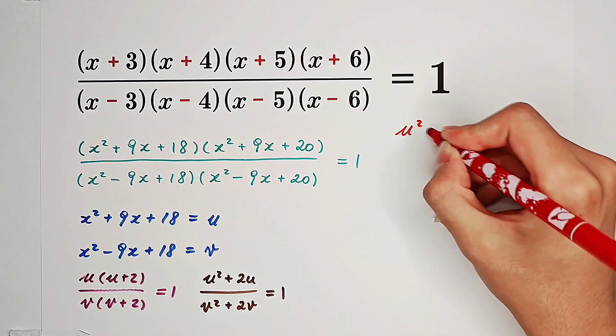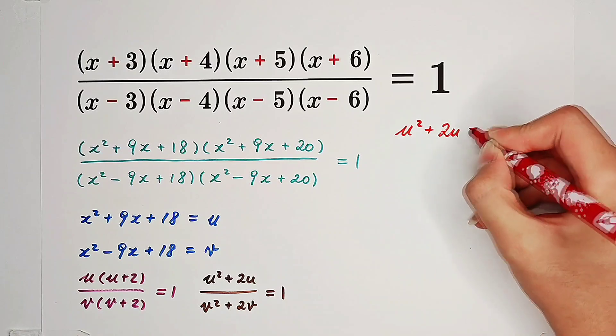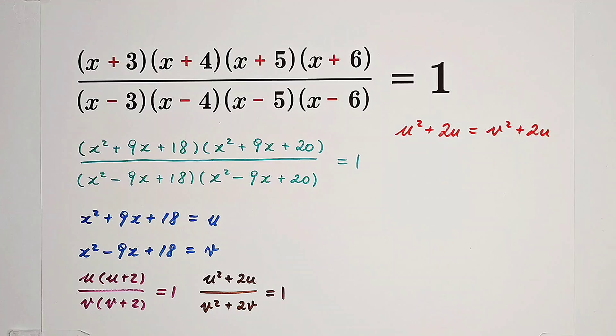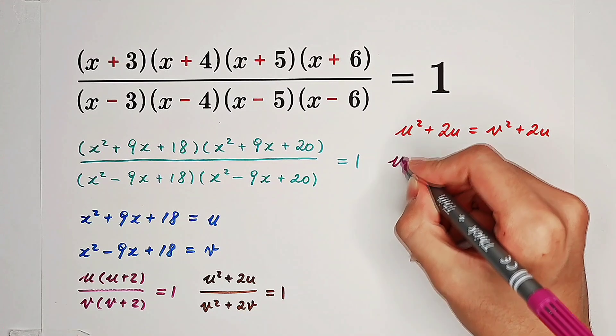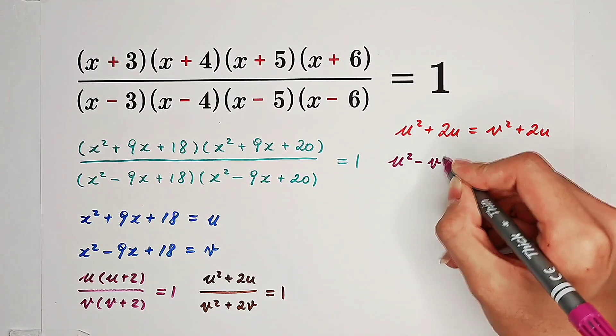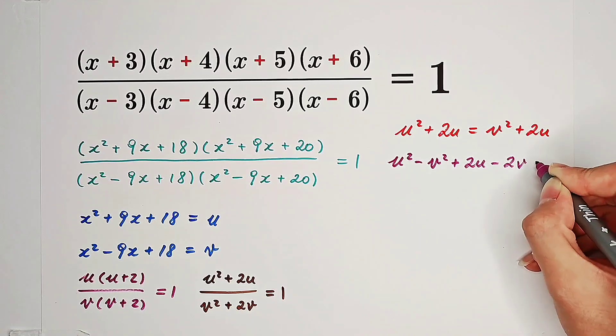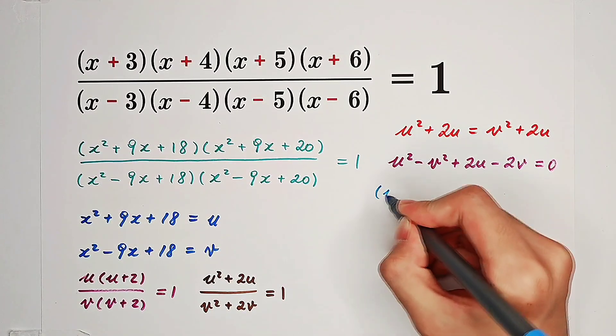u squared plus 2u equals v squared plus 2v if you multiply the denominator on both sides. So we get u squared minus v squared plus 2u minus 2v equals 0.